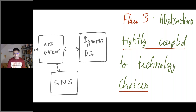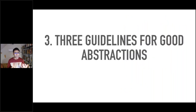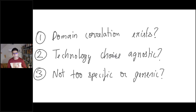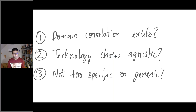Let me leave you with three guidelines for crafting good abstractions. These flow from the flaws I've spoken about. First, is your problem domain defined, and do your abstractions have a correlation to the problem domain? Second, are the abstractions technology agnostic? Third, are they too specific or too generic? These are questions you want to repeatedly ask yourself when crafting abstractions for software design, and you will eventually get it right. Thank you for attending this short talk on software design.